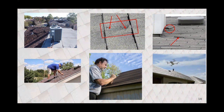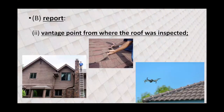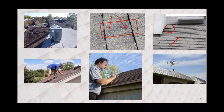Let's talk about drones again in a minute. But remember, however you did it — you need to report it and tell what your vantage point was. The guy in the image here at the bottom is on a ladder — he's at the roof surface, right? So you get all these different concepts: drone, walking the roof, ladder. Whichever way you decide to go, you just need to make sure you report it.